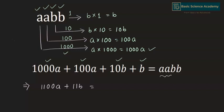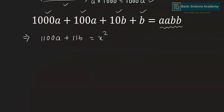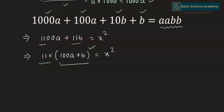Since AABB is a perfect square, let's consider it equals x². We have 11 as a common factor, so taking 11 out gives 11×(100A + B) = x². Since 11 is a prime factor and the number is a perfect square, 100A + B must equal 11×y², so that 11×11y² = x².